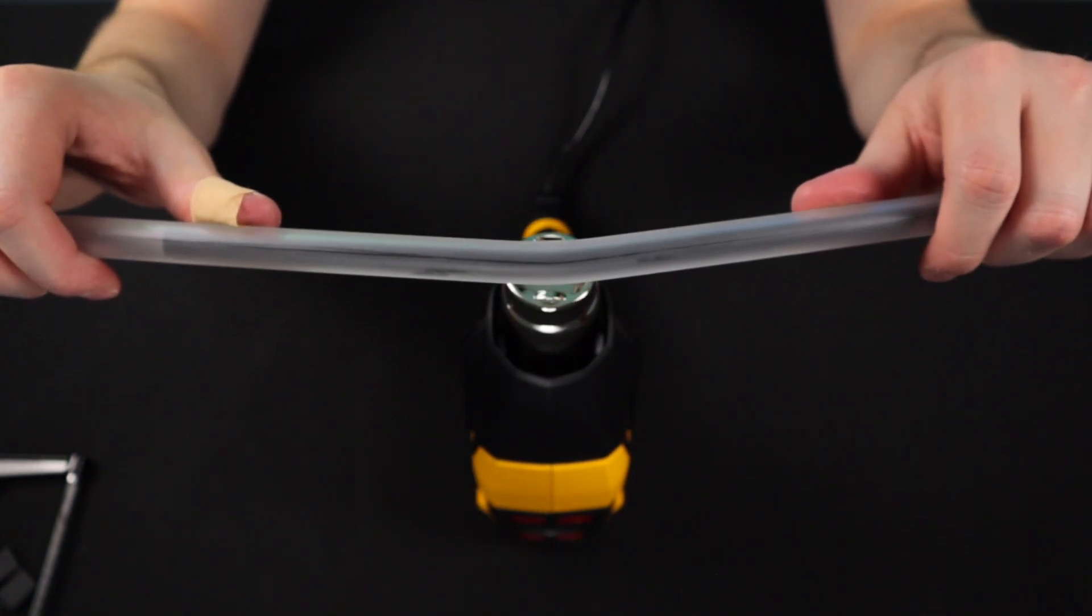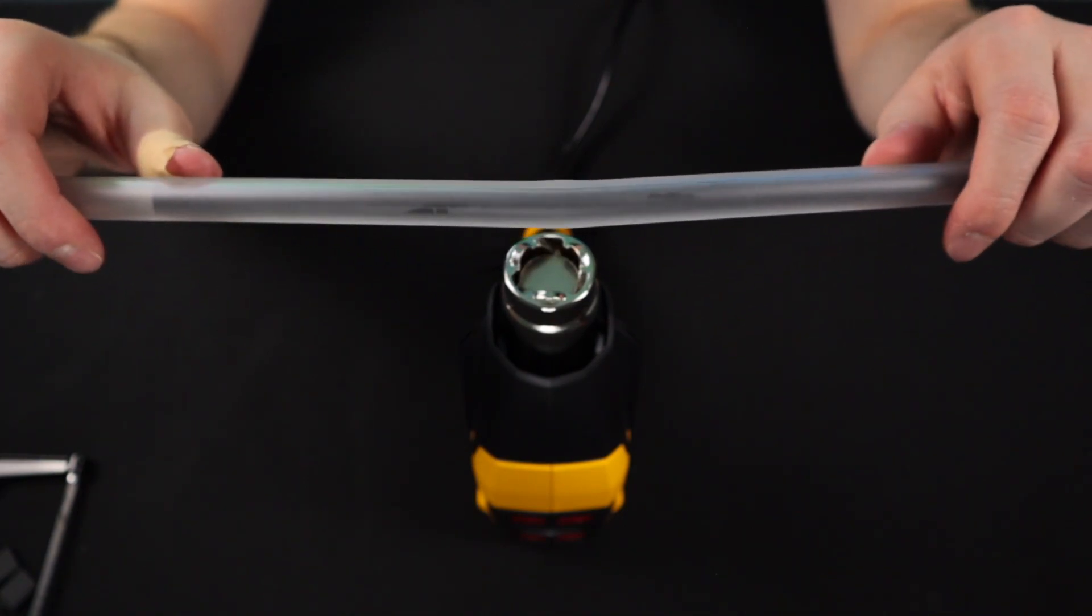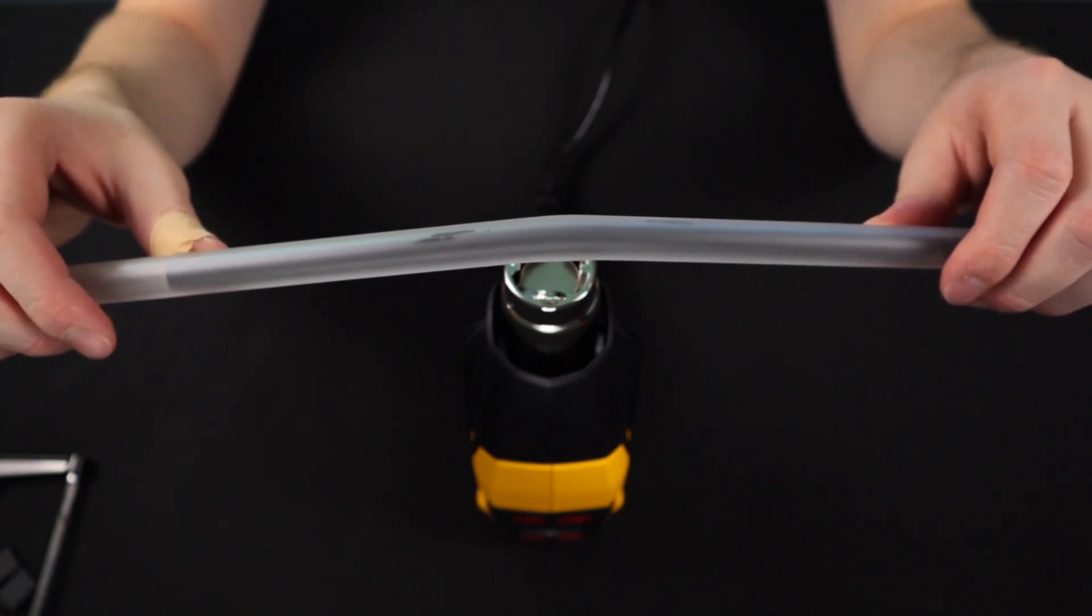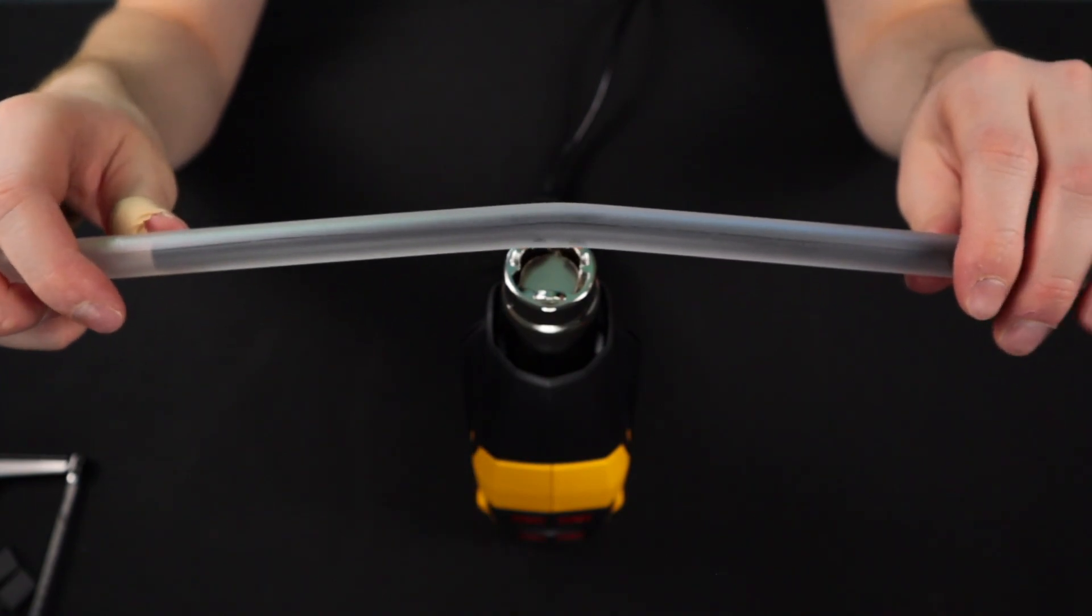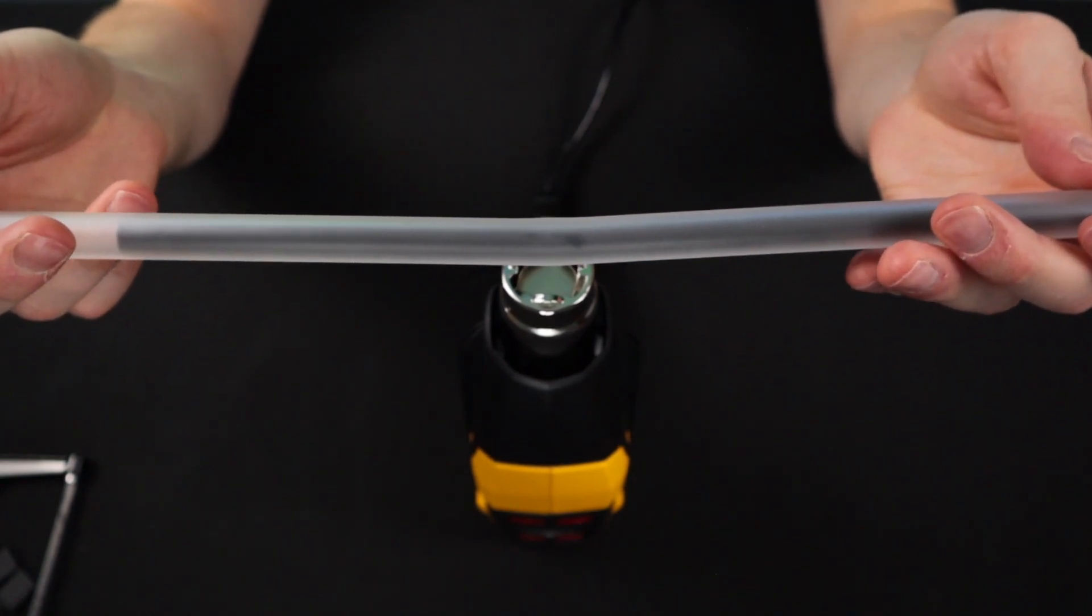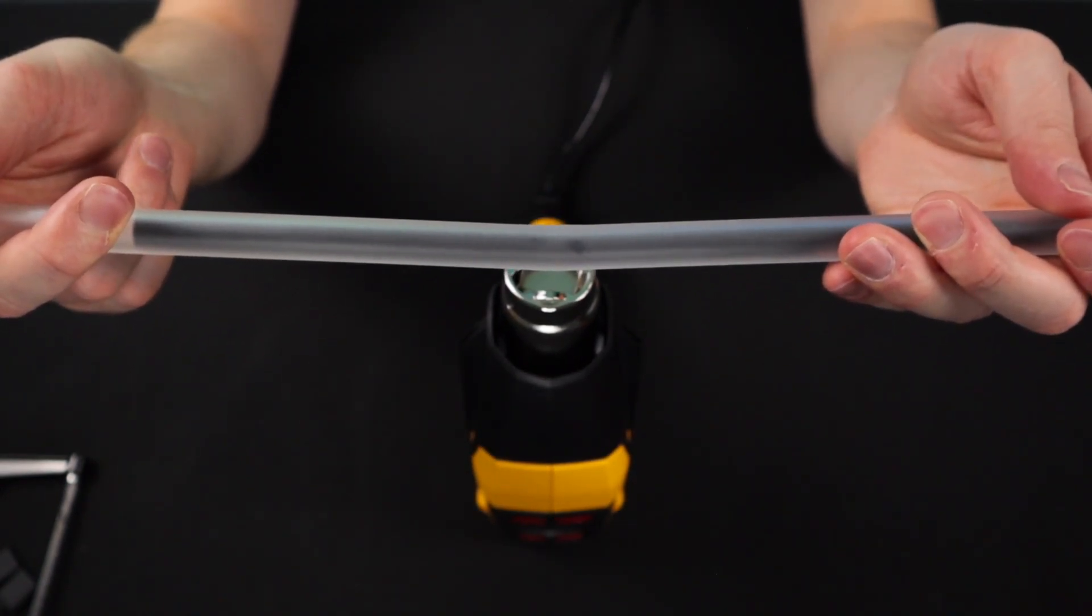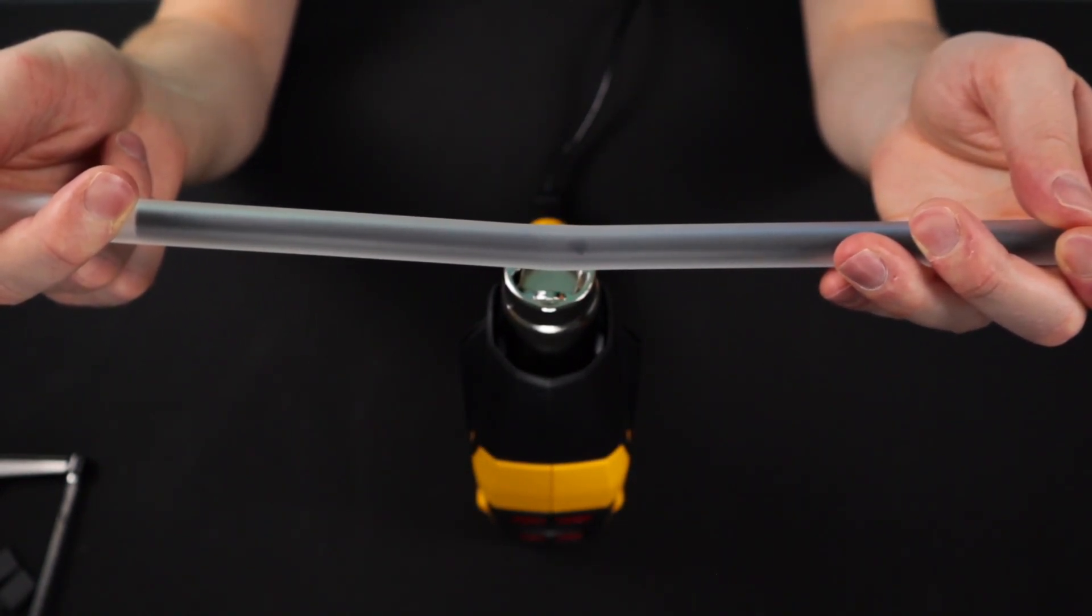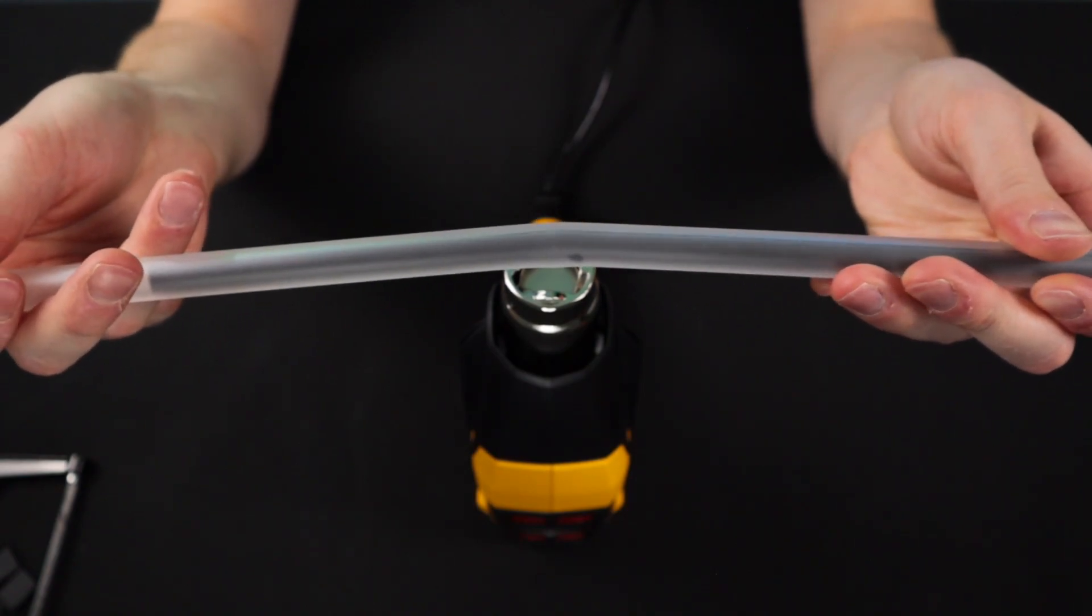It's just a process of heating, turning, heating, turning, a little bit of pressure, bending until you get the tube to the temperature where it just becomes very pliable and you can finish the bend.